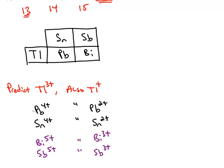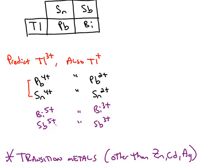The same sort of thing happens for lead and tin. Because they're in group 14, we predict positive 4, but they also exist as a positive 2. Bismuth and antimony, positive 5, but they also exist as positive 3. So you can see that you have two charges: you have the predicted charge, and you have the predicted charge minus 2.